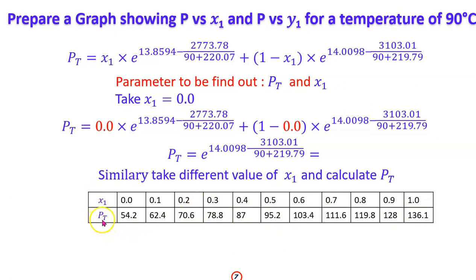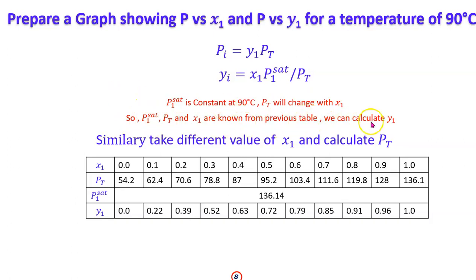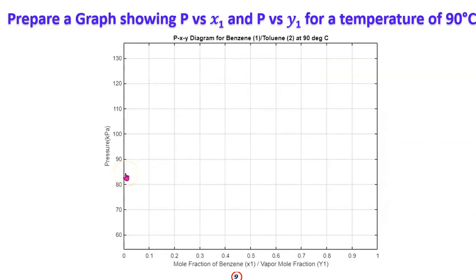Now we also need to find Y1, the vapor-phase mole fraction. The partial pressure P_i equals Y_i times P_total, so Y1 equals X1 times P1_saturated divided by P_total. Here, P1_saturated is constant at 90°C, and P_total changes with X1. Using the previously calculated table of X1 and P_total values, Y1 can be easily calculated for each point, giving the full X1 and Y1 versus P_total dataset.